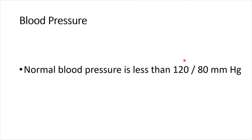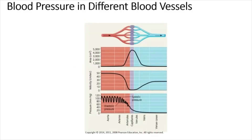The upper reading is 120 millimeters of mercury. This is the systolic pressure — that is the arterial blood pressure during ventricular systole. The second reading, 80 millimeters of mercury, is the diastolic pressure — that is the arterial blood pressure during ventricular diastole. Blood pressure varies in different blood vessels.